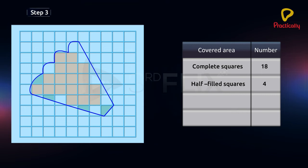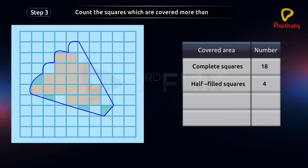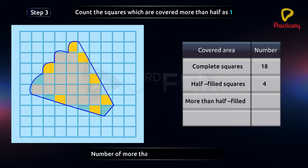Step 3: Count the squares which are covered more than half as 1. Color these squares as yellow. Number of more than half filled squares is equal to 7.